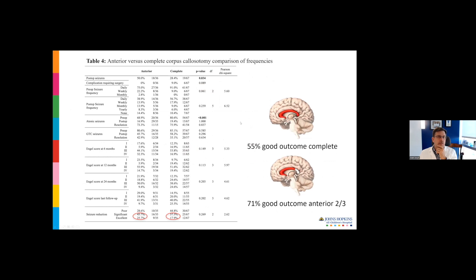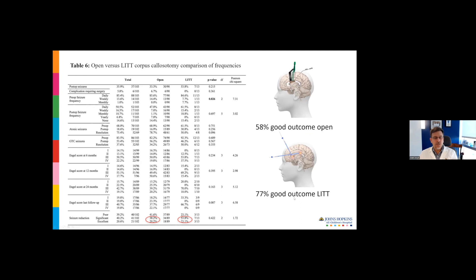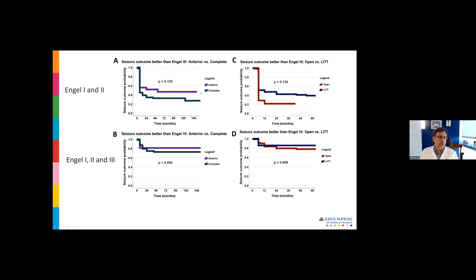In terms of seizure control, this is muddy because the patients were not case controlled, selected prospectively, randomized or assigned. We would tend to offer lit on the sicker patients with really bad epilepsy. So comparing open to lit is not apples to apples in a retrospective review. Complete callosotomy had about 55 to 60% good outcome versus anterior two thirds 71% had a good outcome. Comparing open to lit, the lit patients seem to do a little bit better. But these were not statistically significantly different.